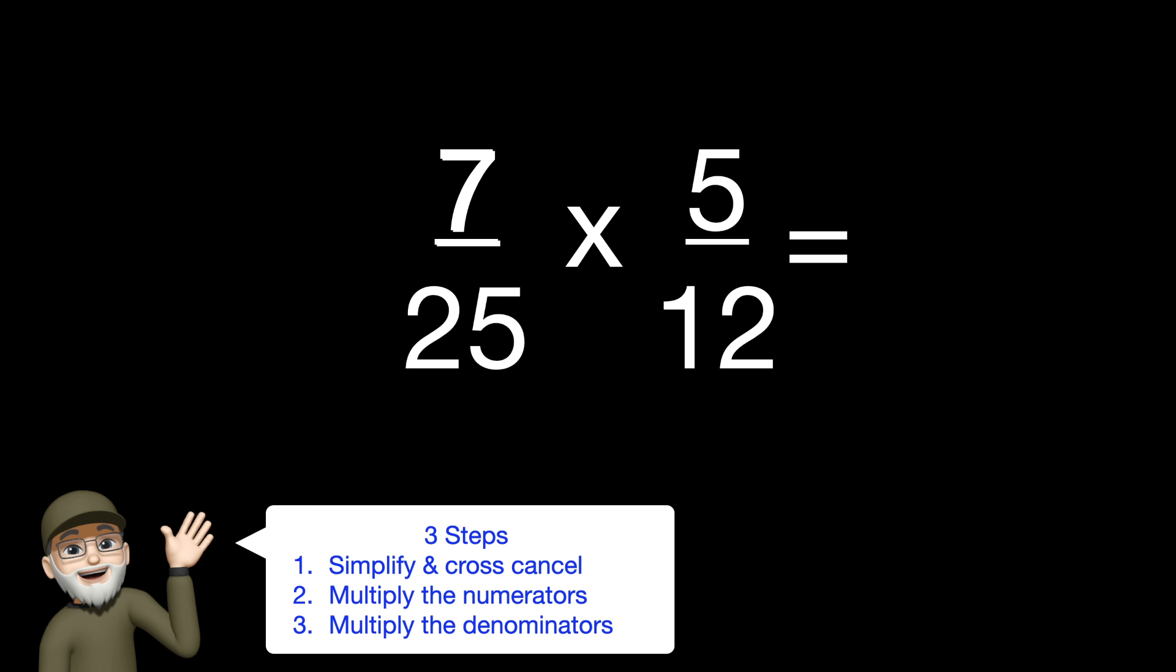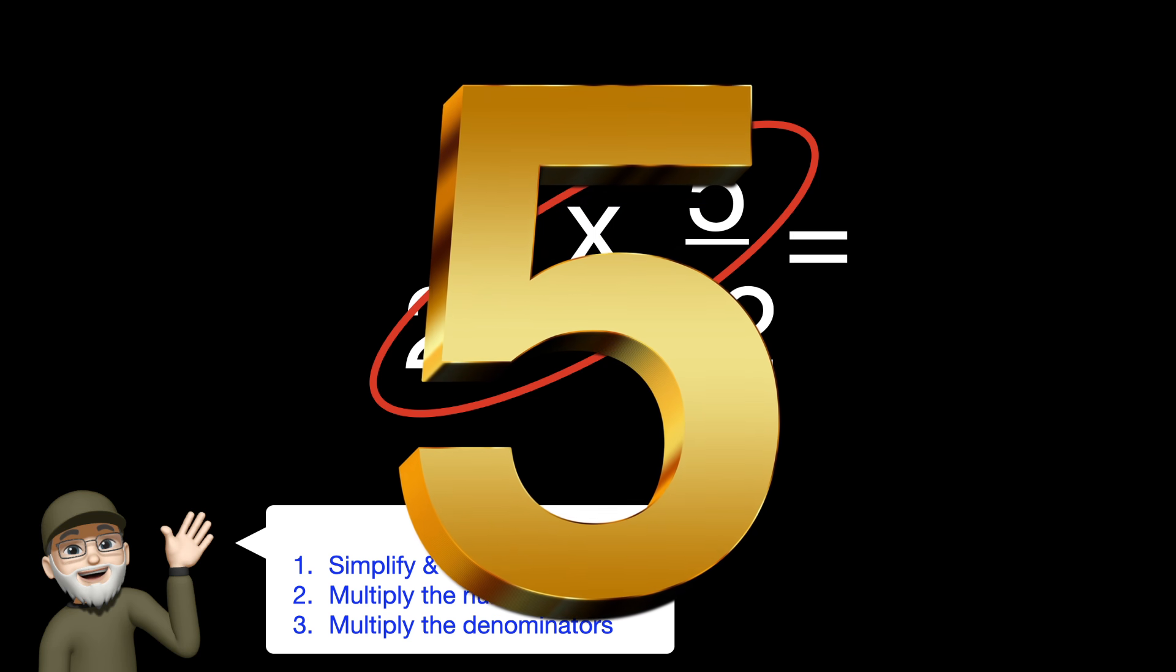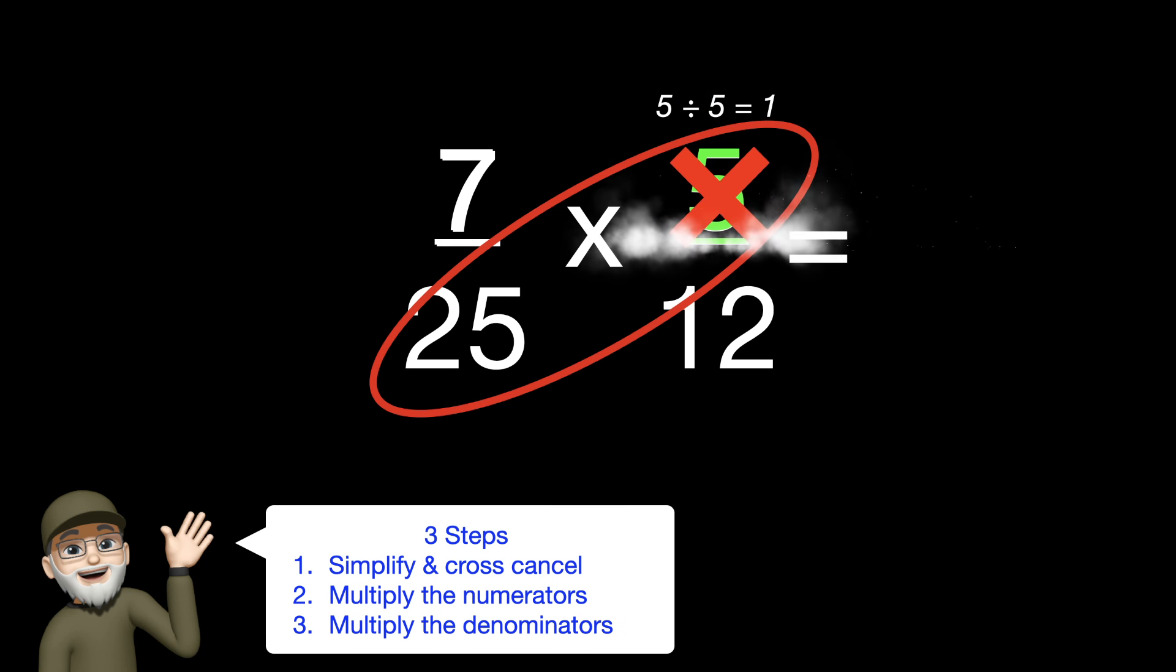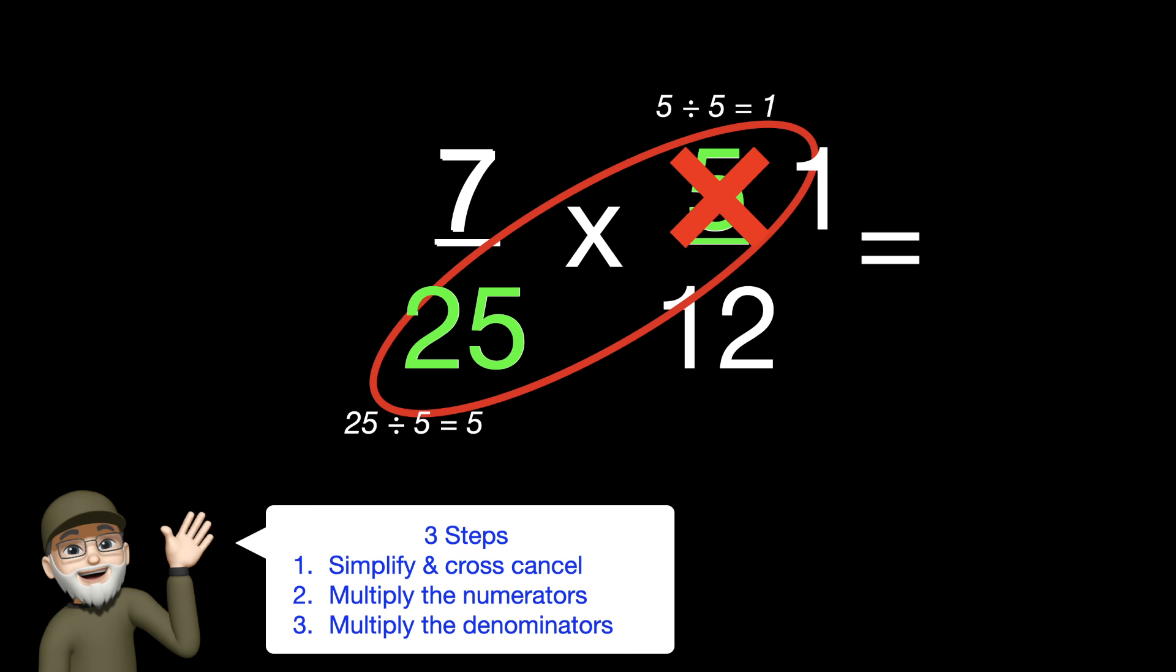So let's move on to the 25 and the 5. What is the greatest common factor for those? That would be 5. So let's start with the 5 on the top. Divided by 5 would be 1. We'll cancel out the 5 and rewrite that as 1. On the bottom, 25, if we divide by 5, that would be 5. We cancel out the 25 and rewrite that as 5.